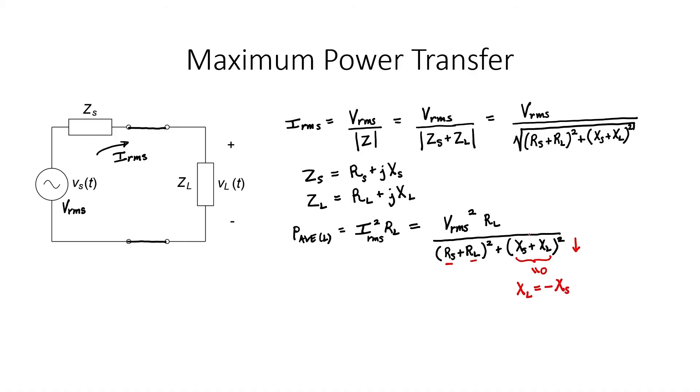Once this term reaches zero, we're left with a formula for average power that resembles an equation that we've already dealt with in the video where we looked at maximum power transfer for DC circuits. Once the equation contains only real numbers, we already know that the load resistor should equal the source resistor in order to achieve maximum power transfer.